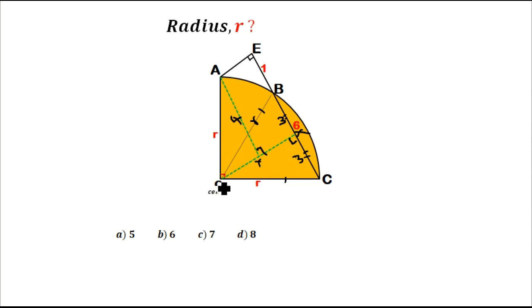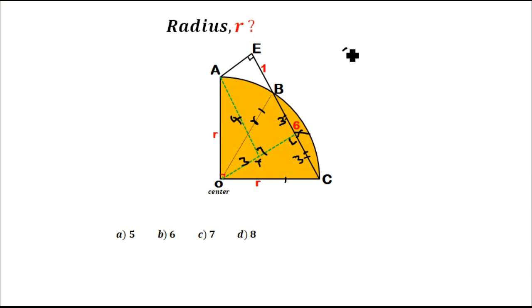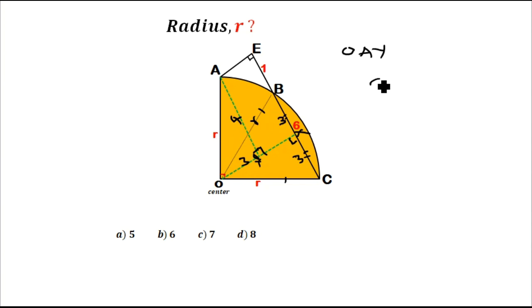You'll see that triangle OAY is similar to triangle OXC. So if the length from X to C is 3, then the length from O to Y is also 3. Looking at triangle OAY, it is a right-angle triangle, so we can apply Pythagoras' theorem to find the radius.